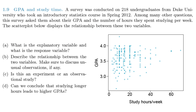In the textbook, the x-axis has the study hours per week, and the y-axis has the GPA score. The three questions asked are: what is the explanatory variable and what is the response variable? Describe the relationship between the two variables, making sure to discuss any unusual observations. And finally, is this an experiment or an observational study, and can we conclude that studying longer hours leads to higher GPAs?